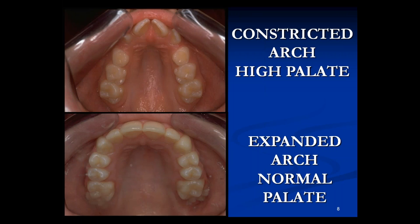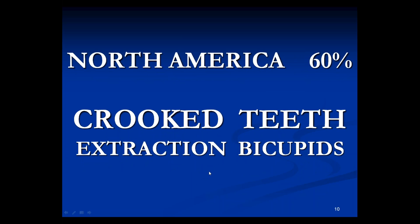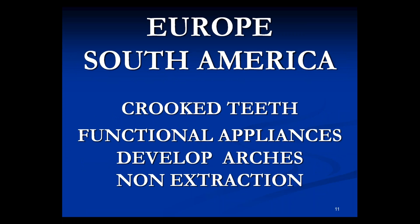Many times we find a constricted upper arch — a very narrow upper arch and high palate. When you expand the arch you get a nice low palate and room for all the teeth. So if you want to make room for all the teeth, you have to develop the arch. I like to develop the arch and not extract teeth — I just don't do very many extractions because I have all kinds of appliances to develop the arches. In North America the trend is basically fixed braces in the permanent dentition, but in Europe and South America when you've got crooked teeth you develop the arches with functional appliances and do it non-extraction.